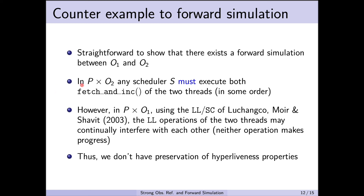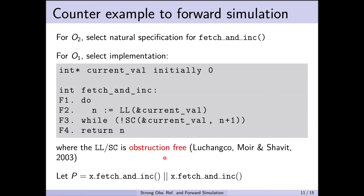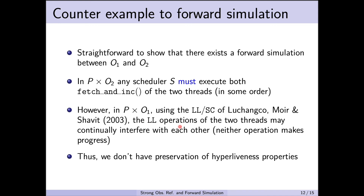Now if we consider the composition of the client program and the abstract object, for any scheduler S, the scheduler must execute both fetch-and-increment operations of the two threads in some order. However, in the concrete implementation using the obstruction-free load-link/store-conditional by Luchanko, Moyer, and Chavit, it's actually possible for the two load-link operations to continually interfere with each other. In the obstruction-free implementation, a load-link in one thread can interfere with the load-link in the other thread, meaning there is a trace in which the store-conditionals of both threads continually fail — neither operation makes progress. This counterexample shows that we don't have preservation of hyperliveness properties even though there is a forward simulation.